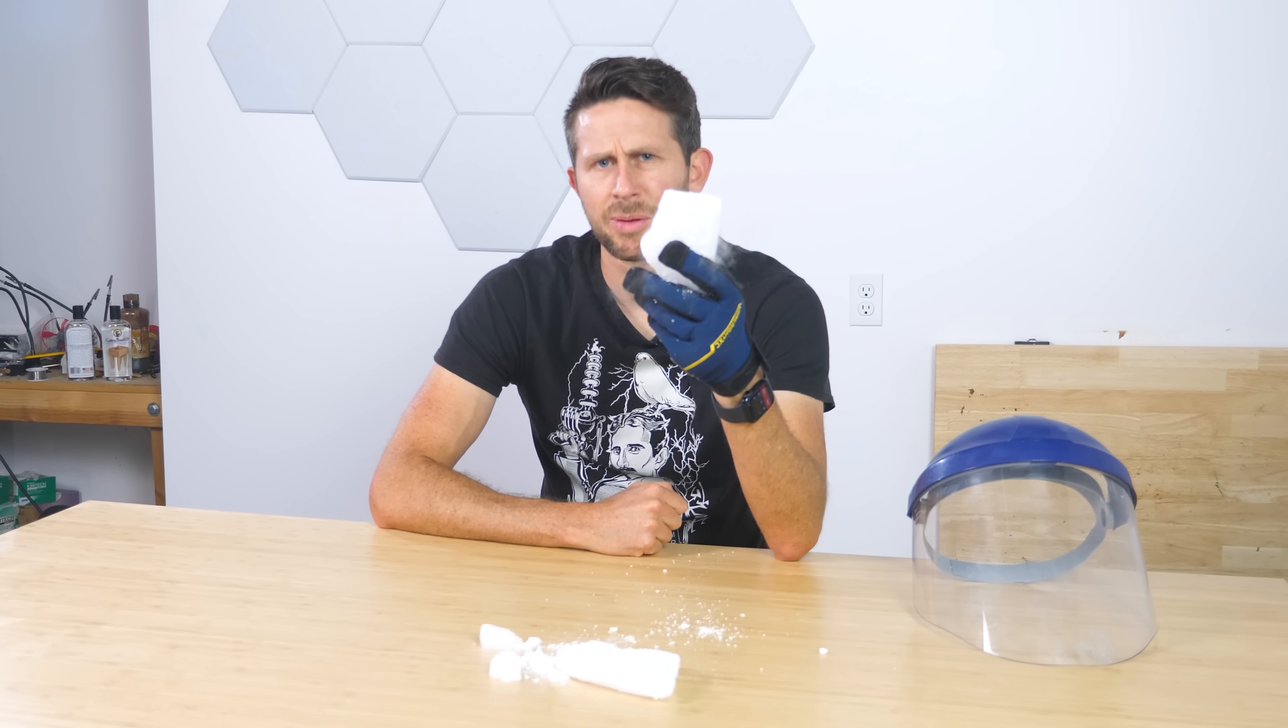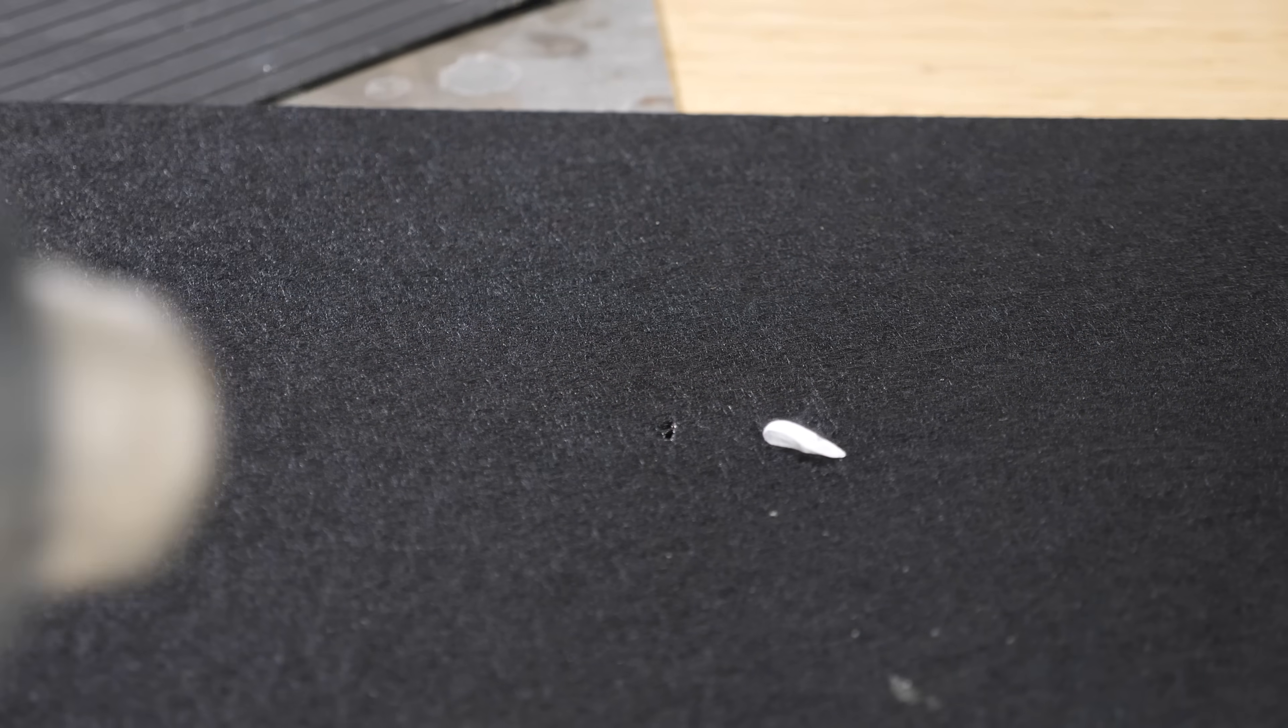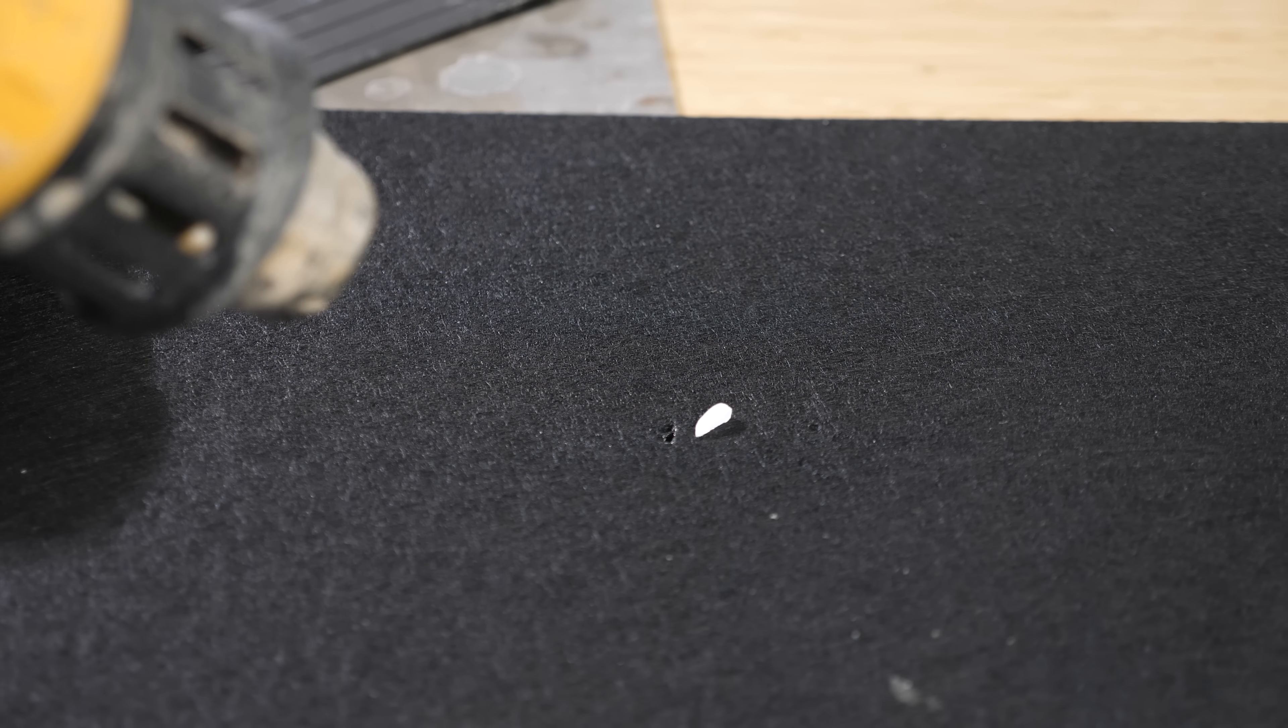If you try to melt dry ice, you're going to be pretty disappointed. For example, if I take this chunk of dry ice and blow heat on it, it kind of just disappears.